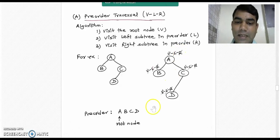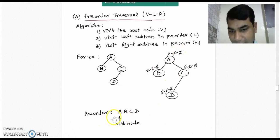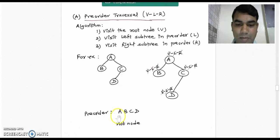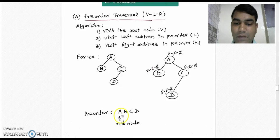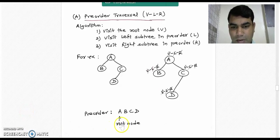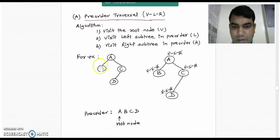The pre-order traversal sequence is A, B, C, D. If you notice, the root node A comes at the beginning of the traversal sequence, which confirms that the root node always comes first in pre-order traversal.